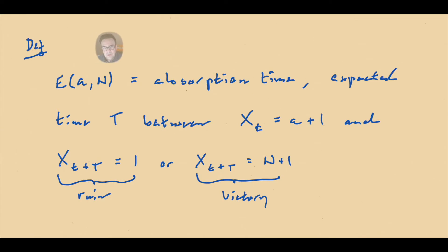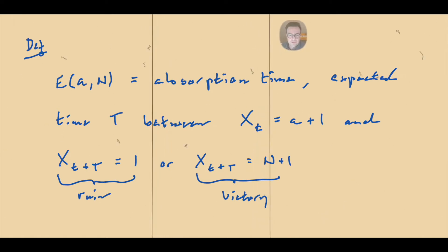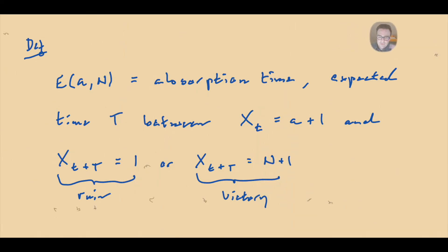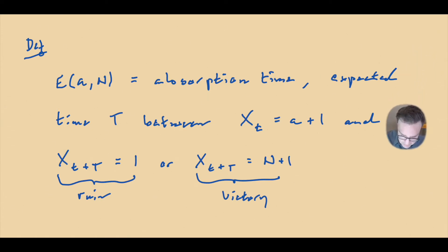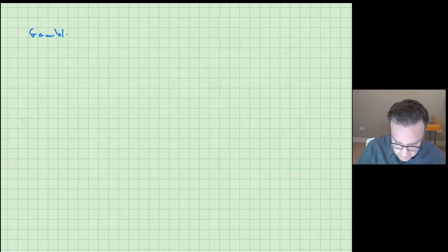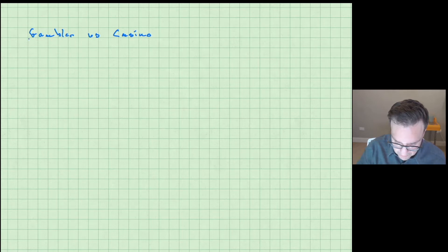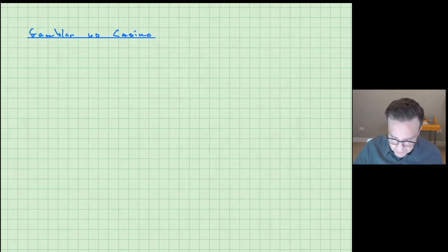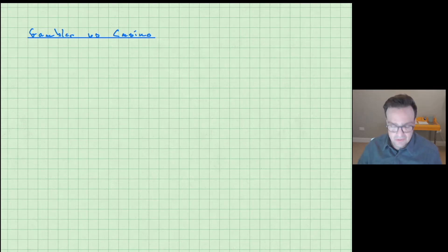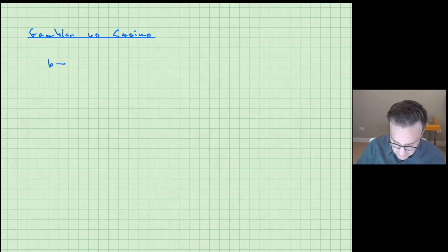Today we're going to carry on talking about random walk problems that can be framed in the context of the gambler's ruin. We're going to start off with a variation called 'gambler versus casino,' because it resembles the actual situation where a gambler plays against the casino. What we change here is that we suppose the number of tokens that player B starts with is infinite — so little b goes to infinity.